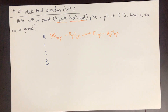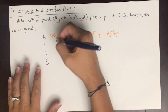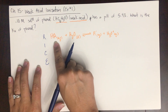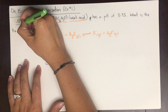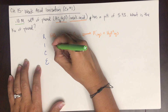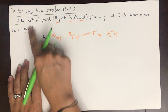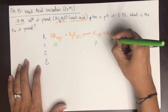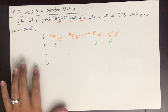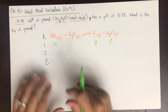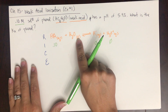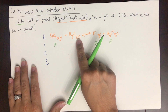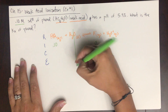The initial concentration of the weak acid is 0.10 molar — that's what goes in the initial row. We don't start out with any products. Also, because water is a liquid, it is excluded from the equilibrium table, so that row is always going to be blank.